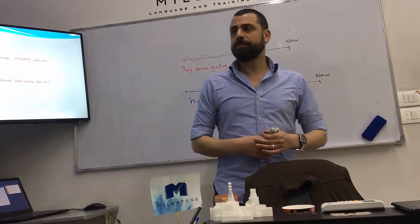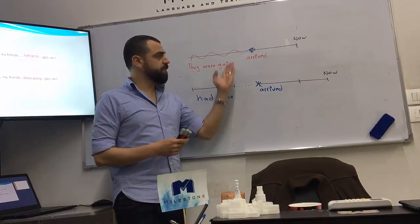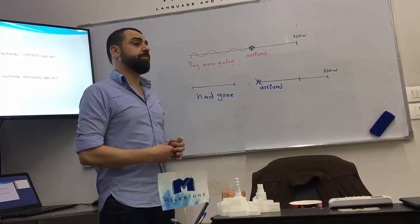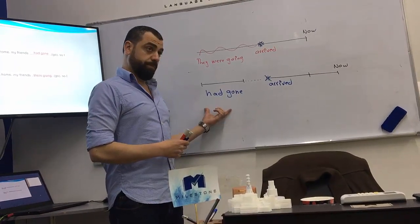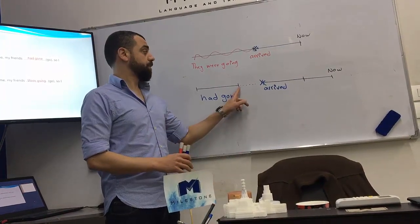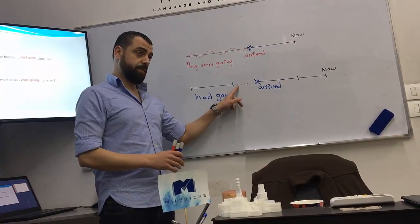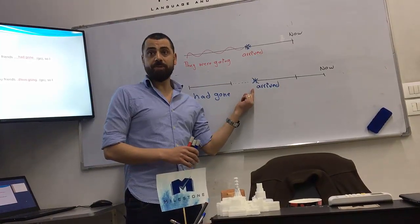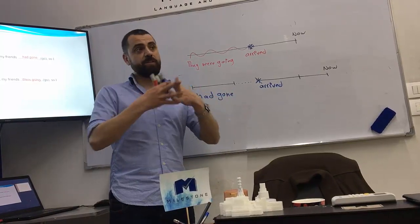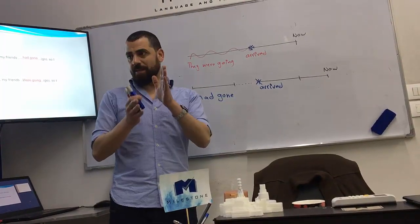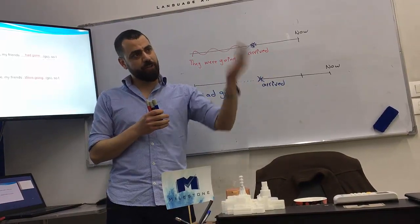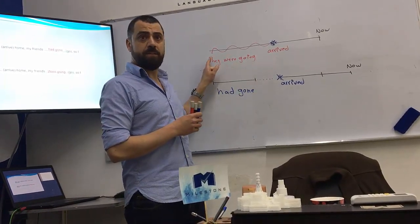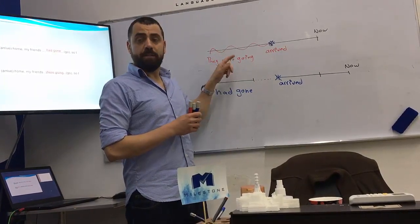So when do we use past perfect? When there were two actions in the past, and one of them happened first and finished. Then time passed and something else happened later. But with past continuous, the actions are connected — they come across each other, they overlap.